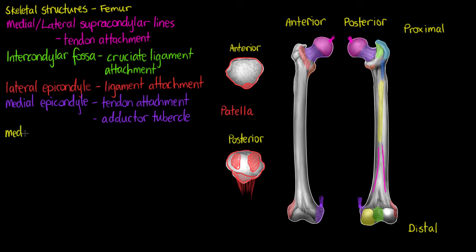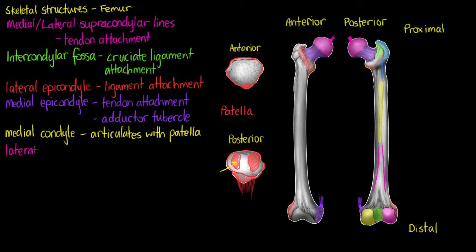Now we've covered the epicondyles, so let's focus on the condyles. The first is the medial condyle, highlighted in yellow. The condyles are the part of the femur that articulate with our patella — the facets highlighted in red on the patella are going to articulate with the condyles. When you flex your knee, the medial condyle interacts with the medial facet. The lateral condyle, highlighted in pink, is going to articulate with the facet for the lateral condyle of the femur.